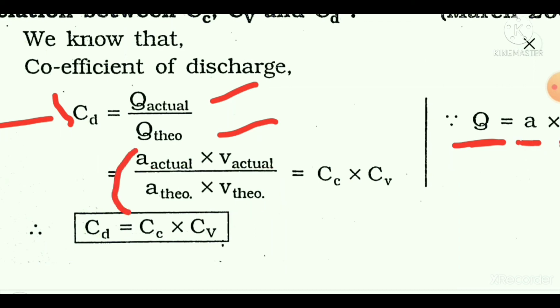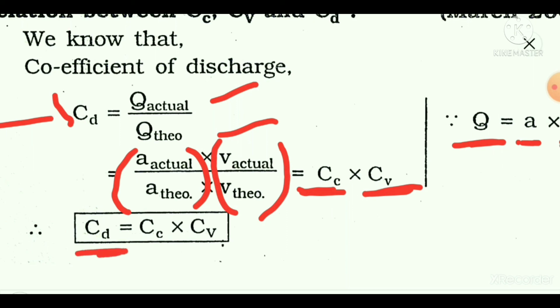Here, the ratio of actual area to theoretical area is the coefficient of contraction, and the ratio of actual velocity to theoretical velocity is the coefficient of velocity. From this we get the relation: the coefficient of discharge equals the coefficient of contraction multiplied by the coefficient of velocity, i.e., Cd = Cc × Cv. These are the hydraulic coefficients. Thank you.